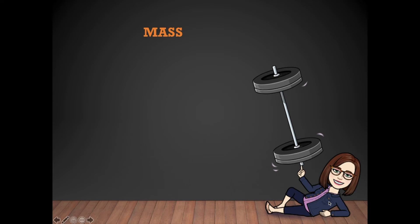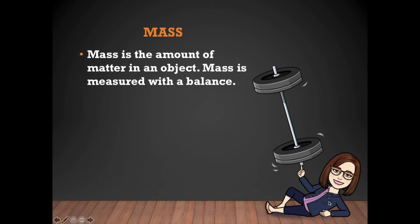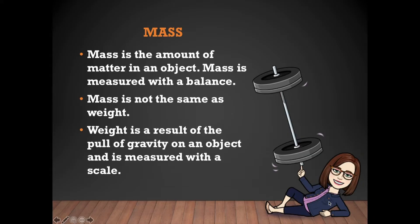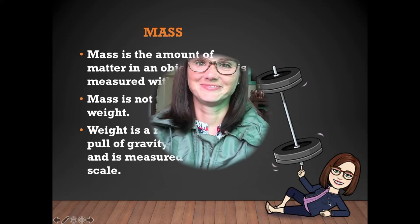Mass is another physical property of matter. Mass is the amount of matter in an object and is measured with a balance. Mass is not the same as weight. Weight is how we determine mass here on Earth — it is a result of the pull of gravity on an object and is measured with a scale.